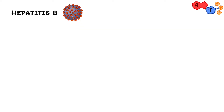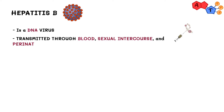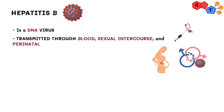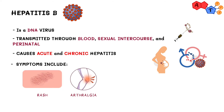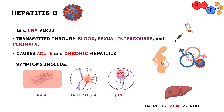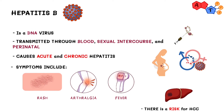Moving on to hepatitis B: hepatitis B is a DNA virus transmitted in three main ways — blood, sexual intercourse, and perinatally. It has a long incubation period of many months and can cause both acute and chronic hepatitis — B for both. Initially the patient will have non-specific symptoms like rash, arthralgia, and fever. Since it can cause chronic hepatitis, it can lead to hepatocellular carcinoma, or HCC for short.